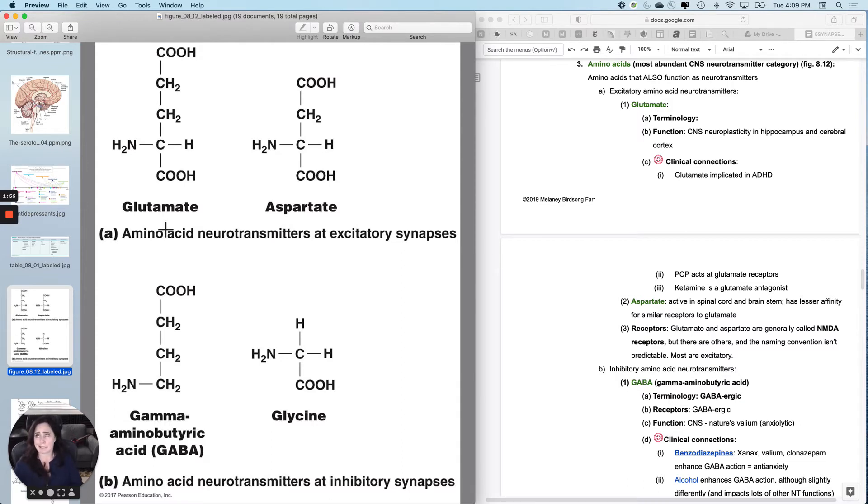PCP is a drug that not very many people use anymore. It acts at glutamate receptors. It's that drug that you might've heard about, like in a movie from the seventies or eighties when a 150 pound dude is so 10 foot tall bulletproof that it takes six cops to bring them down.